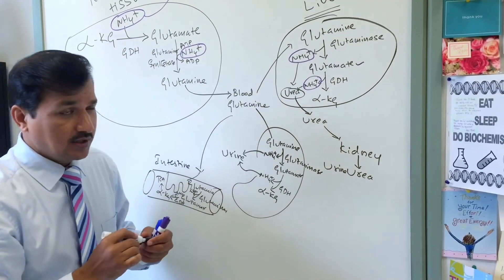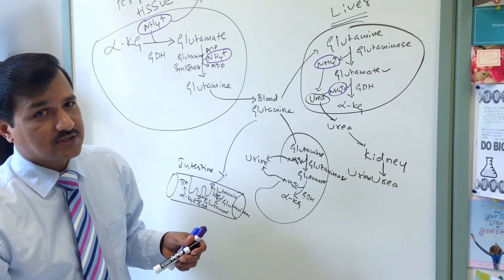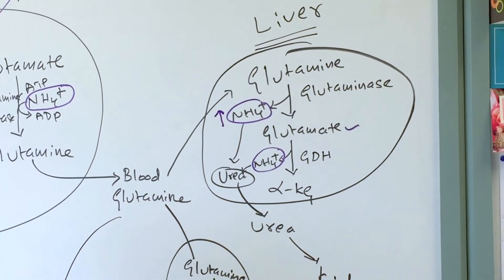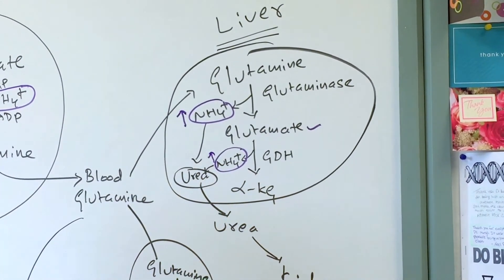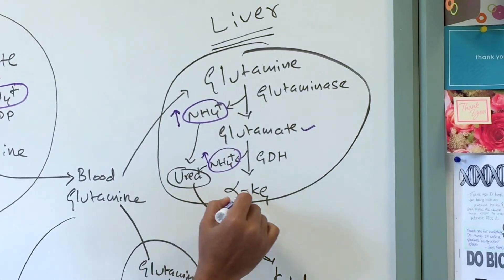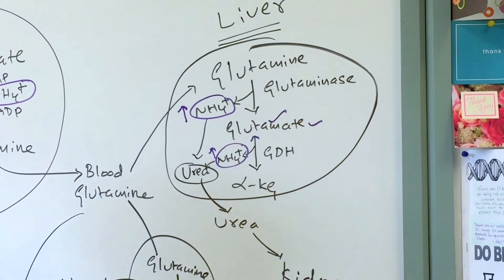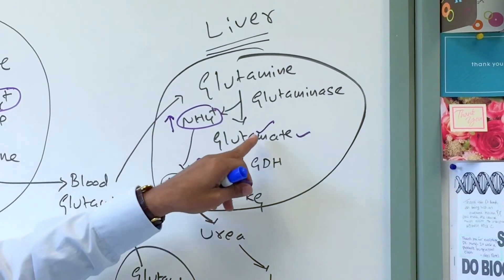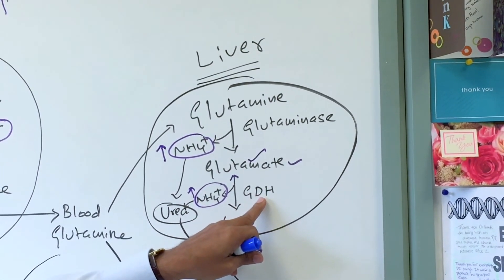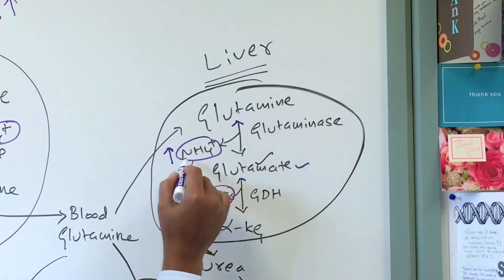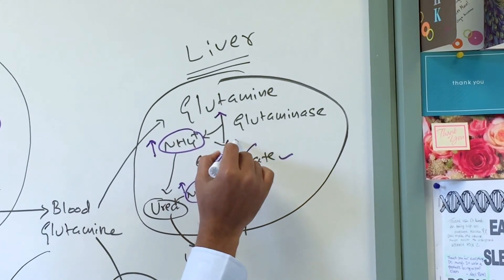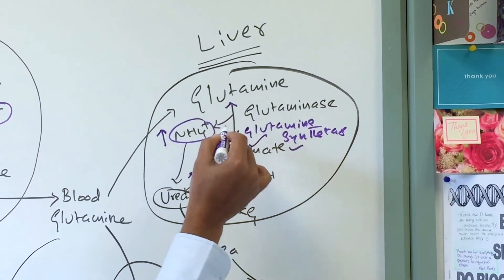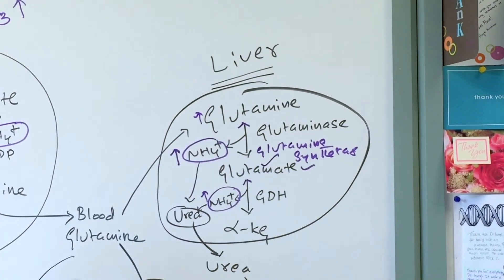Sometimes the urea cycle in the liver becomes saturated. The urea cycle has five enzymes, and when saturated, ammonium ion accumulates in the liver. In this case, reversal of reactions occurs: alpha-ketoglutarate fixes ammonium ion to make glutamate by glutamate dehydrogenase, and glutamate is then converted to glutamine by fixing one more ammonium ion via glutamine synthetase. This glutamine is released back into the blood.